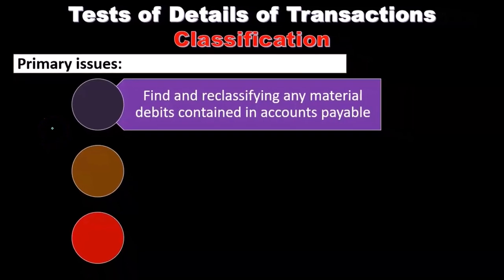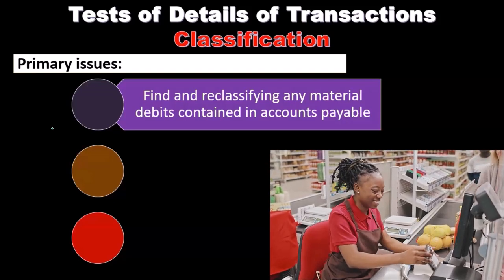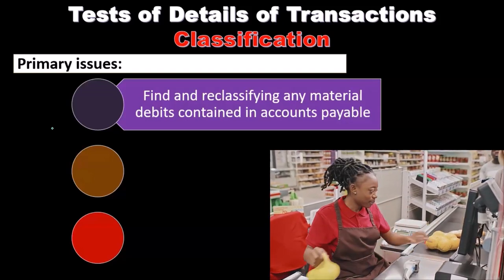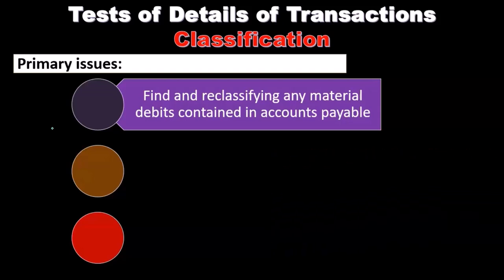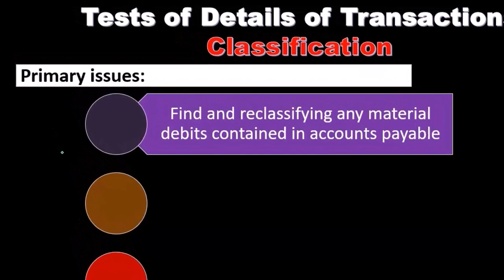A debit balance in accounts payable can occur based on company policy. For example, if we purchase something and typically put a down payment on the purchase before receiving it, the system may record that as a negative payable to the vendor. We might do that because it makes it a little easier to track by vendor what is owed, instead of putting it into an advance payment account.